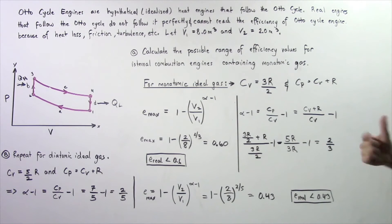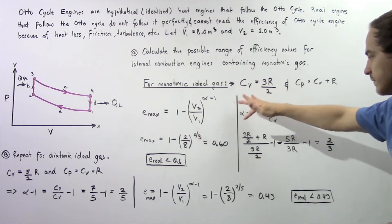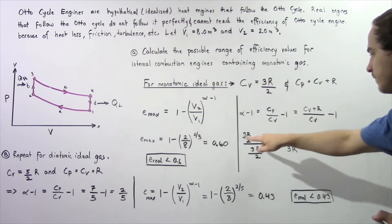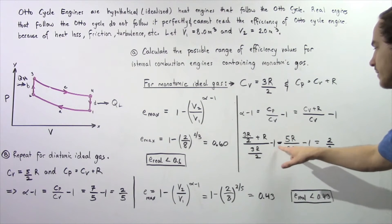Now we essentially want to replace Cv with R. So Cv is equal to 3R divided by 2. So we replace Cv on top and bottom with 3R divided by 2. And that's exactly what we get. So 3R divided by 2 plus R divided by 3R divided by 2 minus 1.